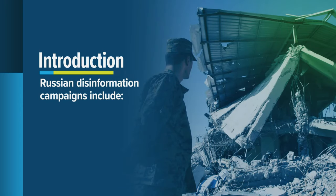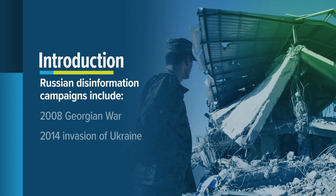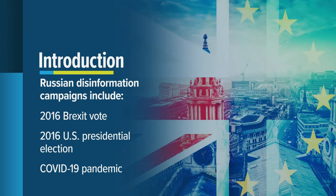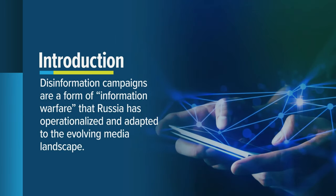Russia's disinformation campaigns are common in global politics and surround its actions like the 2008 Georgian War and the 2014 invasion of Ukraine. They also target international issues such as the 2016 Brexit vote, 2016 US presidential election, and COVID-19 pandemic. Disinformation campaigns are a form of information warfare that involves flooding targets with information so they can't form clear or fact-based decisions.